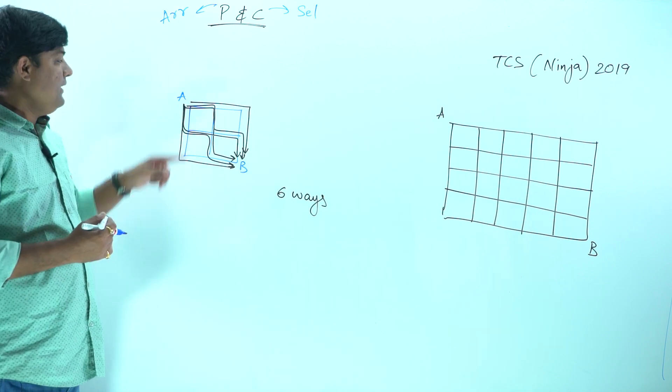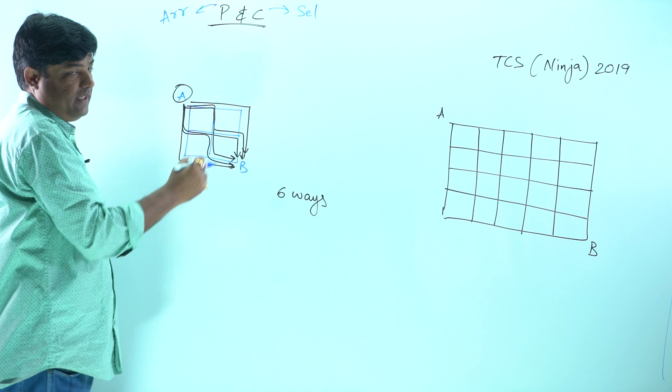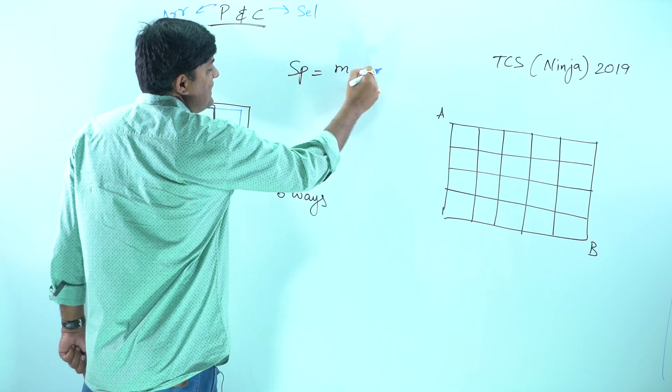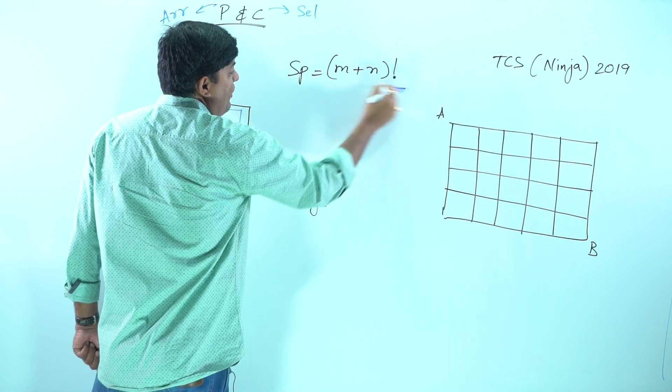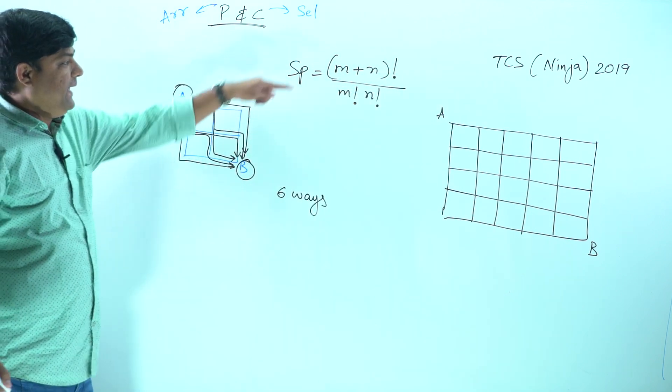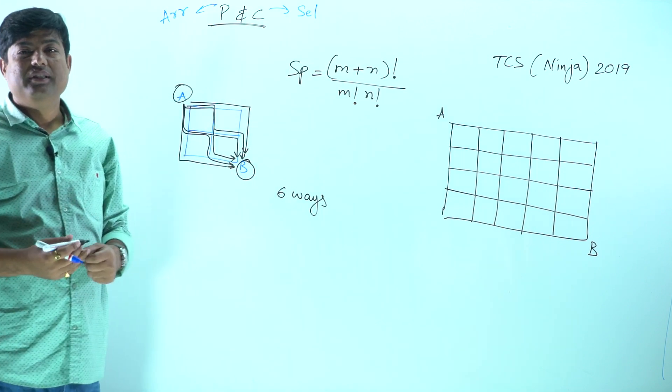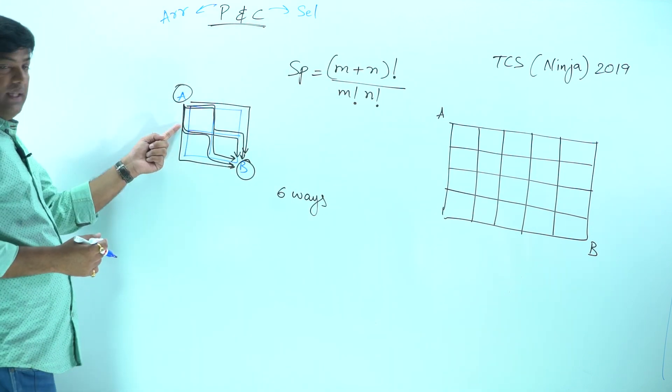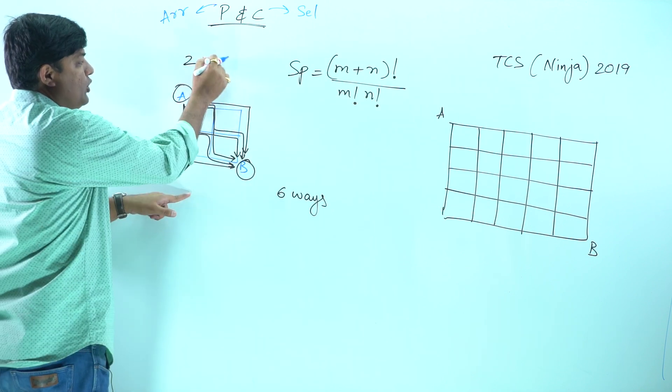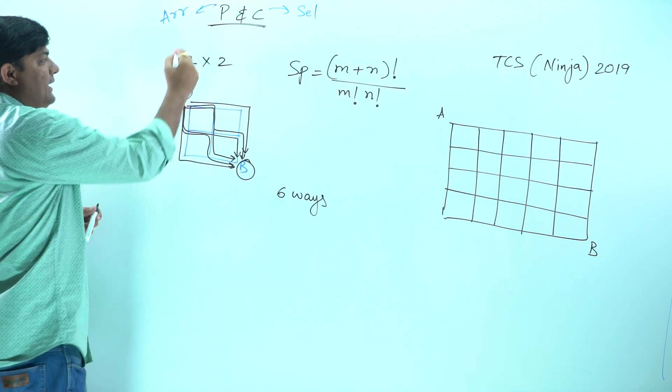Instead of counting all these ways orally, we can have a very simple formula. The number of shortest paths from one corner of the grid to another corner is (m+n)! upon m! n!, where m and n describe the size of the grid. Here you have got two rows and two columns, so m value is 2, n value is 2.